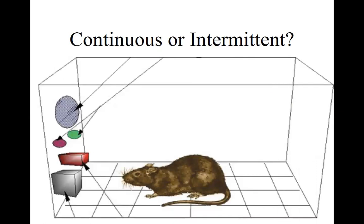This rat is in a Skinner box. He receives primary positive reinforcement in the form of a food pellet, which is delivered to the little red box. The response he has to make to get reinforced is to correctly identify which colored light — red or green — has just flashed. If he receives continuous reinforcement, that means every time he gets the right answer, he gets a reward.